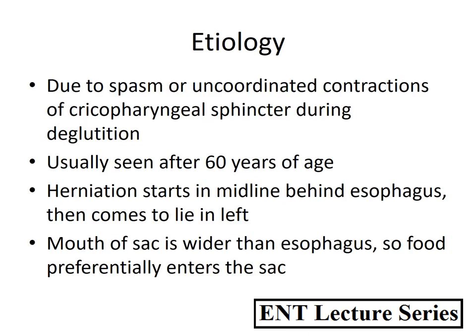The etiology is due to spasm or uncoordinated contractions of the cricopharyngeal sphincter during deglutition. This results in an increase in intraluminal pressure which leads to herniation of the pharyngeal mucosa through the potential weak site, that is Kilian's dehiscence. It is generally seen after 60 years of age.